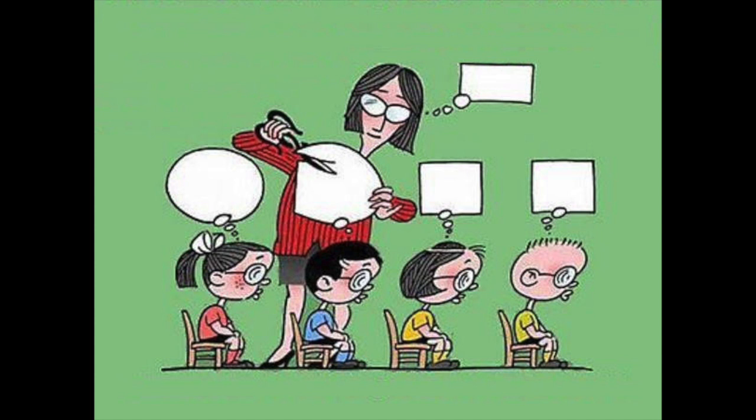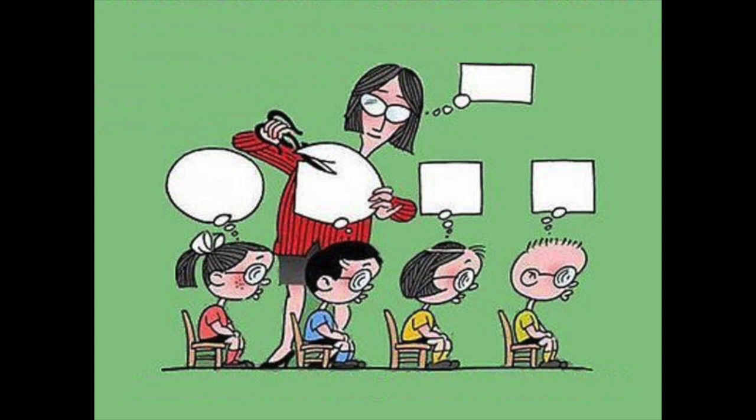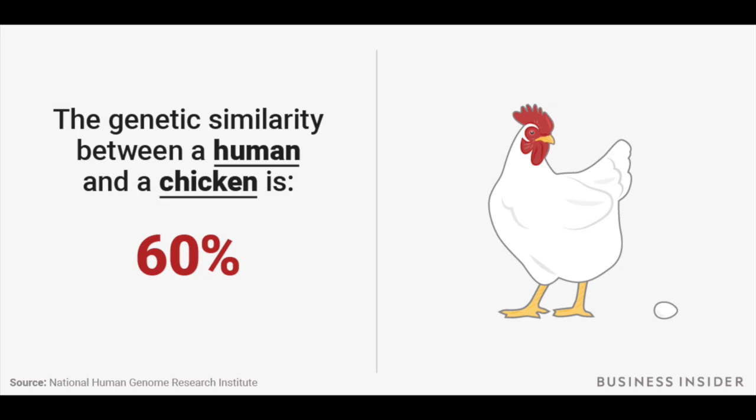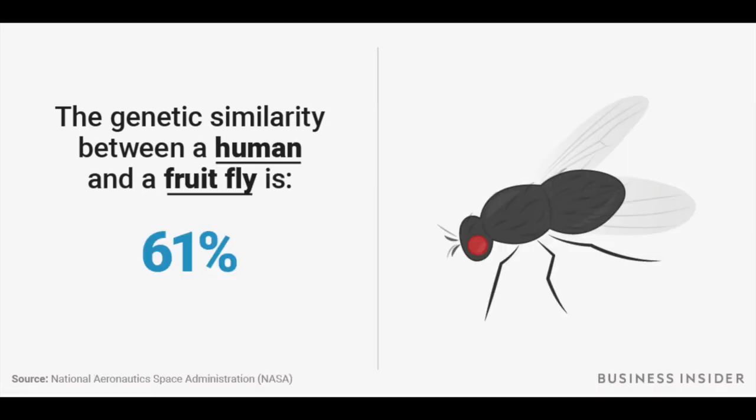Sadly, the kids stand no chance. You see, genetic similarity only goes so far. For example, we share about the same amount of genetics with a banana as we do with a chicken, and about the same as a fruit fly.